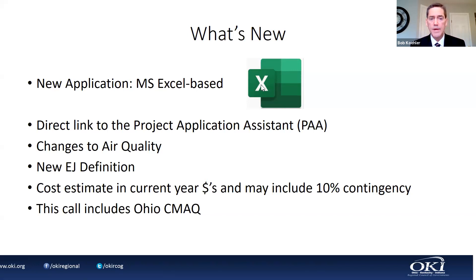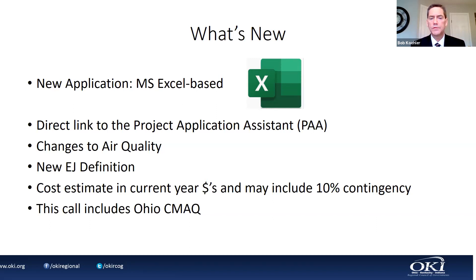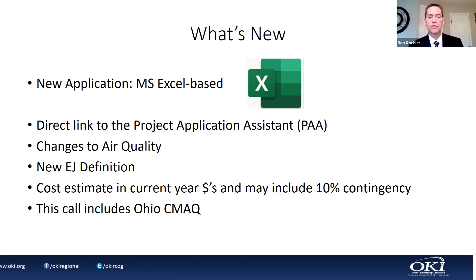You still have to put the particular values into the cells, but it'll be right there for you. It'll also improve the efficiency and accuracy of our review as well. We have some changes to the air quality score, as was approved last month by the ICC. We have a new EJ definition, also reviewed and adopted by the ICC. For cost estimates this year, you can submit up to a 10% contingency — it'll be a straight 10% if you choose to use one. And this year's call includes Ohio CMAC.